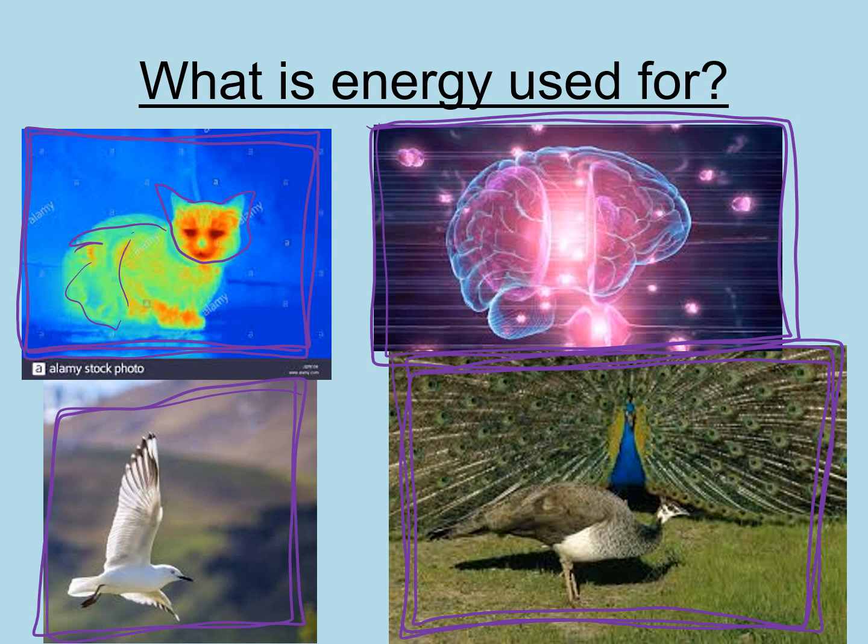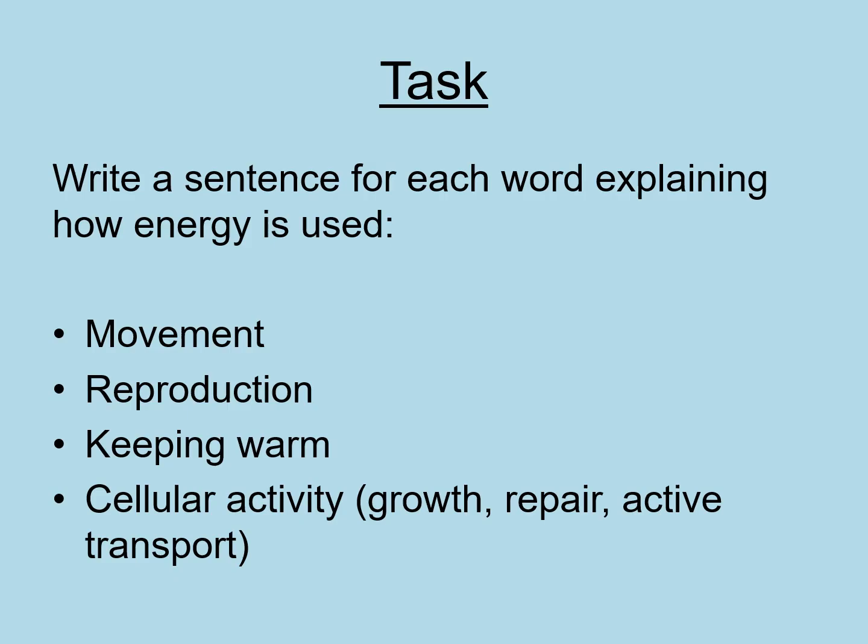Whether that's the mating process, or the female investing a lot of energy in producing offspring and laying eggs, or if you think about pregnant people — they need to eat a little bit more food for the growing baby inside them. So those are the four main things we use energy for. I'd like you to write a sentence for each word below explaining how energy is used: movement, reproduction, keeping warm, and cellular activity. If you struggle with any of these, use the textbook or BBC Bitesize. Pause the video here and complete your four sentences.